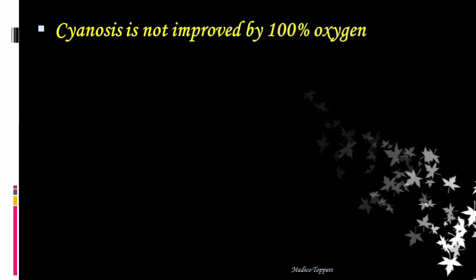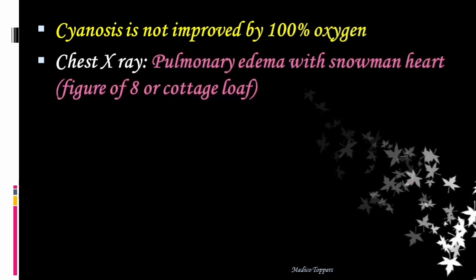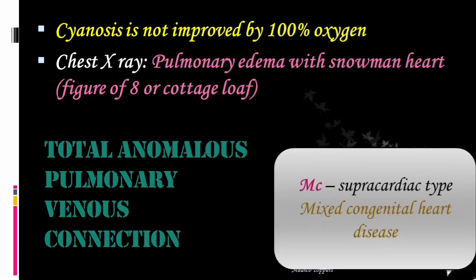In this condition, cyanosis is not improved by 100% oxygen. Chest X-ray shows pulmonary edema with a snowman heart, showing a figure-of-eight or cottage loaf appearance. The condition is total anomalous pulmonary venous connection (TAPVC). The most common type is supracardiac variety. This is a mixed congenital heart disease having both cyanotic and acyanotic features.